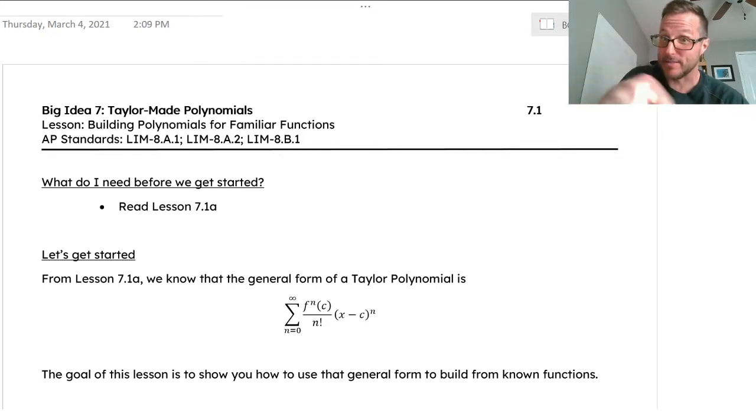Check this out. The general form of a Taylor polynomial is what you should have gotten out of that article that's been posted to you. It deals with a lot of factorials and nth derivative. You see it down here.